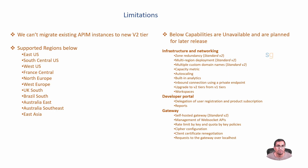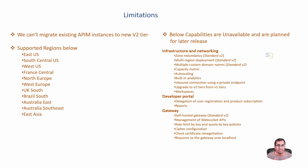An important point to note is that it comes with certain limitations as of this video. We cannot migrate existing APIM instances to the new Standard V2 tier. It is not supported in all regions — only certain regions are supported. Some capabilities are not available yet but are planned for later releases. Interestingly, Microsoft is also planning a Premium V2 service, but more details are not yet available.